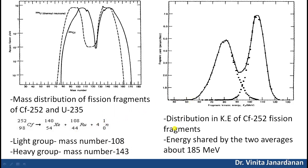This figure shows the distribution in kinetic energy of californium-252 fission fragments. The energy shared by the two fragments averages about 185 mega electron volts. The distribution of energy is also asymmetric, with the light fragment receiving the greater fraction.